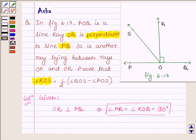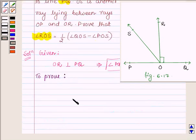And we have to prove that angle ROS is equal to half of angle QOS minus angle POS.